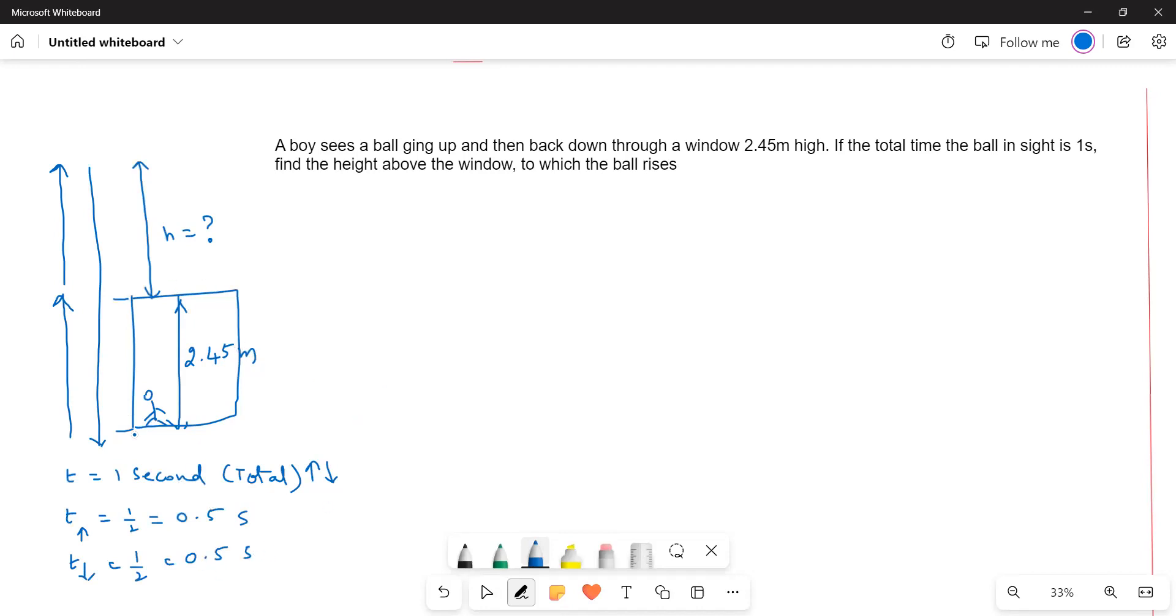And then the window height is known to us. We have to find out above the window how high the ball reaches. Now we will write down the equation, velocity equation. We know now VF square is equal to VI square plus 2AD.